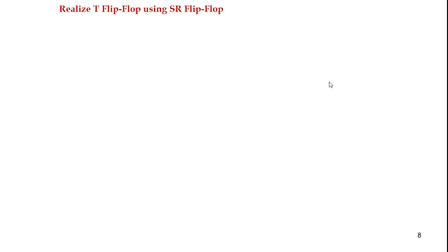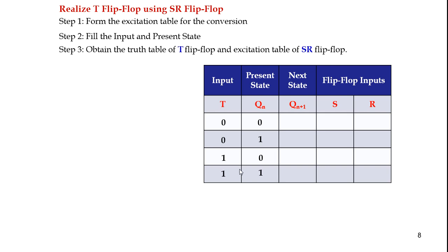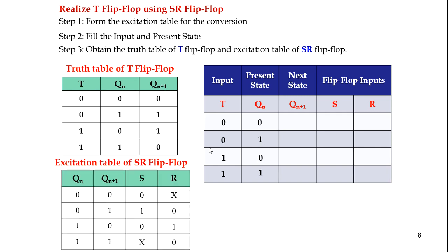The next example is to realize a T flip-flop using an SR flip-flop. The first step is to form the excitation table for the conversion. For input T = 0, the present state can be 0 or 1, and when T = 1, the present state can also be 0 or 1. The next step is to obtain the truth table of the T flip-flop and the excitation table of the SR flip-flop.